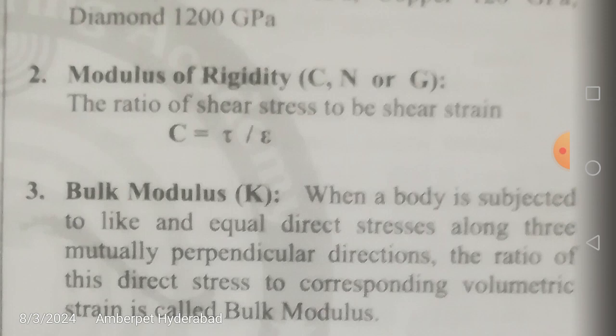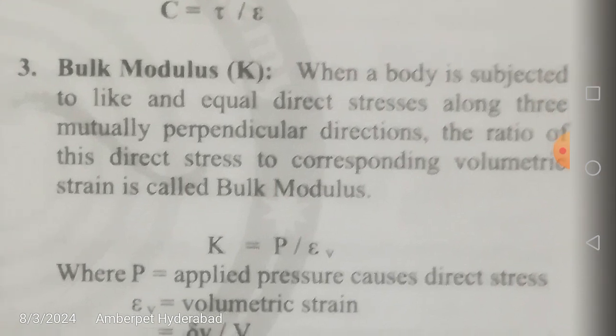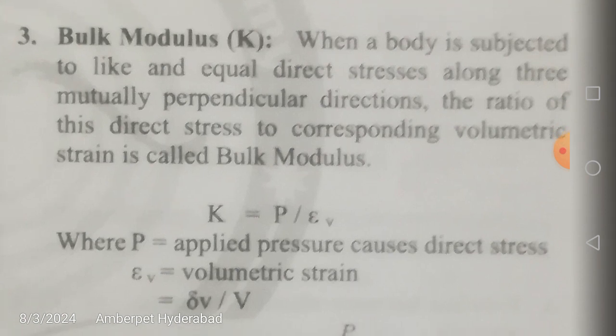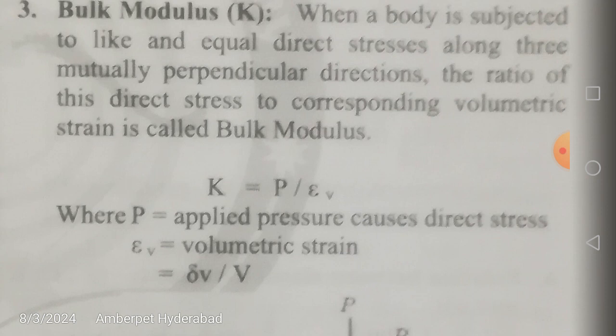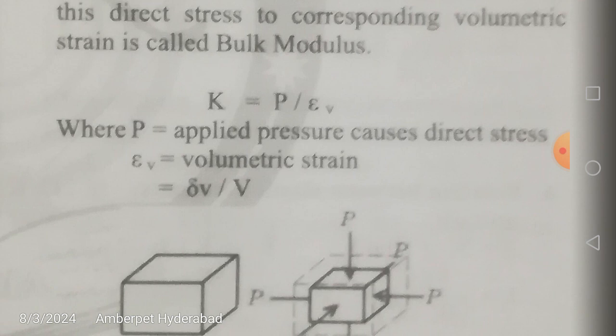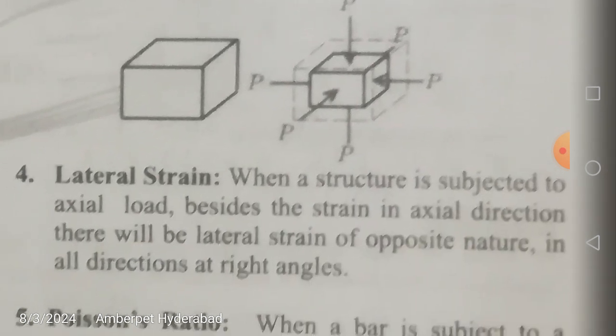Bulk modulus: when a body is subjected to like and equal direct stresses along three mutually perpendicular directions, the ratio of this direct stress to the corresponding volumetric strain is called the bulk modulus. Young's modulus and modulus of rigidity are important for solid materials, but bulk modulus is very important for liquids. It is denoted by K, and equals the applied pressure P divided by volumetric strain ε_v, where ε_v equals δV/V. A diagram shows normal stresses on the six faces in three directions.